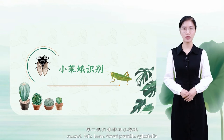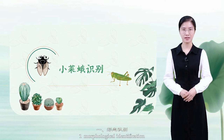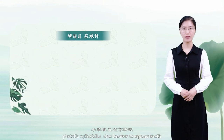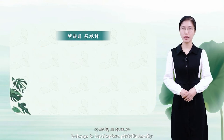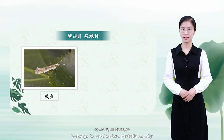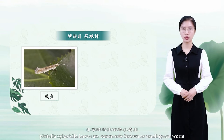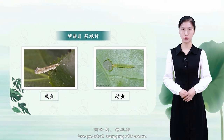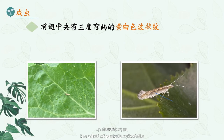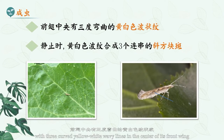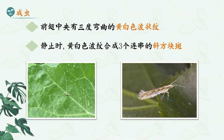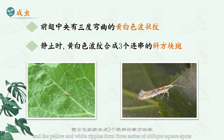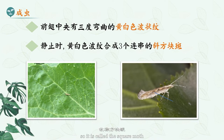Second, let's learn about Plutella xylostella. One: morphological identification. Plutella xylostella, also known as the square moth, belongs to Lepidoptera, Plutella family. Its larvae are commonly known as the small green worm or two-pointed hang silk worm. The adult has three curved yellow-white wavy lines in the center of its front wing. When at rest, the two wings fold into a roof shape, and the yellow and white ripples form three series of oblique square spots — hence it is called the square moth.